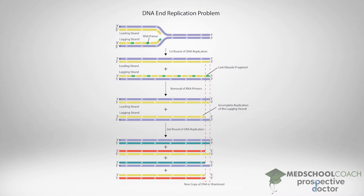As you recall, during DNA replication, synthesis occurs at the leading strand and the lagging strand. In the leading strand, nucleotides are added continuously by DNA polymerase and that strand is completely synthesized. In the lagging strand, the DNA is replicated in fragments. Since the lagging strand runs 3' to 5' and DNA polymerase can only add nucleotides in the 5' to 3' direction, there are multiple RNA primers required. From the RNA primers, DNA polymerase can add nucleotides, resulting in many fragments called Okazaki fragments.